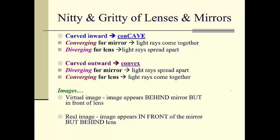A concave shape for a mirror means converging, but for a lens it means diverging. A convex shape — curved outward — is converging for a lens but diverging for a mirror. These are the key differences between mirrors and lenses.